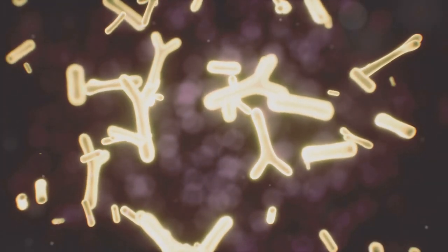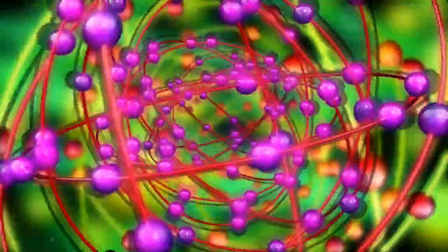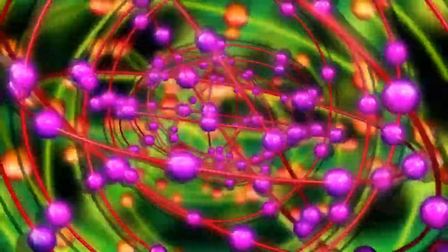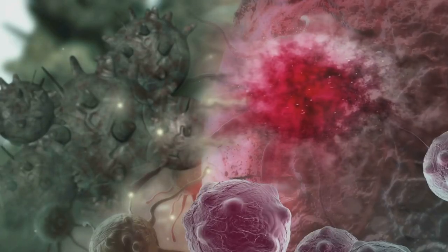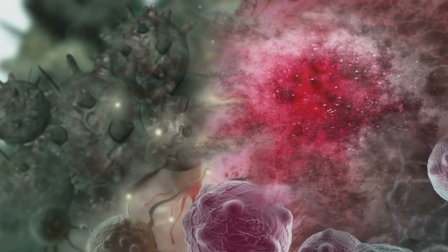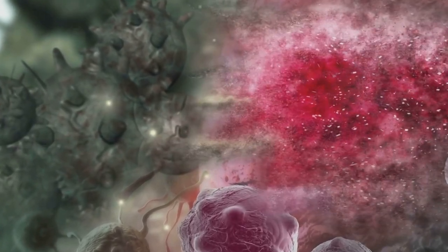This imbalance can wreak havoc on our cells, damaging DNA, proteins, and lipids, essential components of our cells. Think of free radicals as unstable molecules with an unpaired electron. They roam around looking to steal an electron from other molecules, causing a chain reaction of damage.